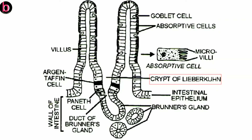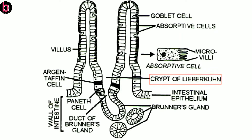Crypts of Lieberkühn is a very simple tubular structure present throughout the small intestine, in between two villi. It carries four different types of cells. The first one is paneth cells, which are found only in the duodenum region.